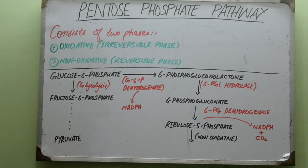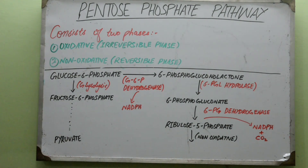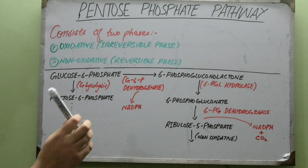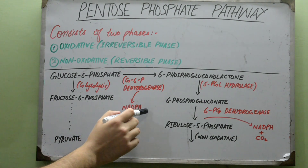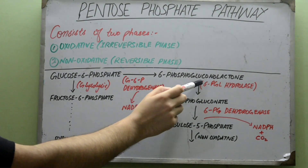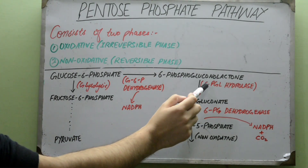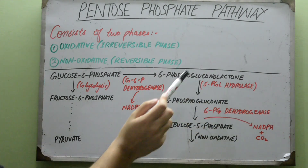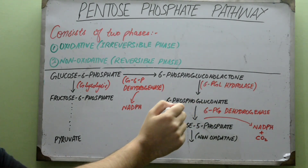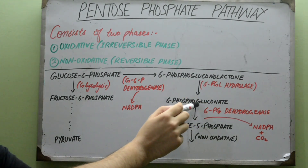Because there is a dehydrogenase, it uses an NADP+ molecule and produces NADPH. You might wonder why there is no NADH — I will address that in a separate video on the uses of NADPH. For now, just remember that an NADPH molecule is produced. This 6-phosphogluconolactone is then acted upon by 6-phosphogluconolactone hydrolase to form 6-phosphogluconate.